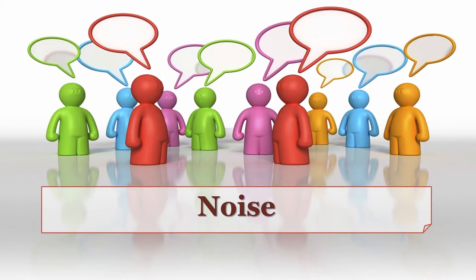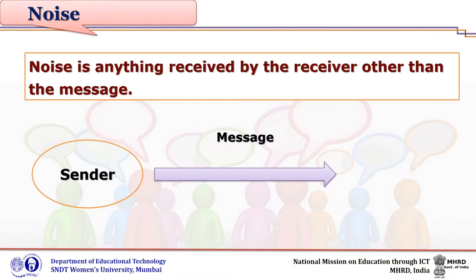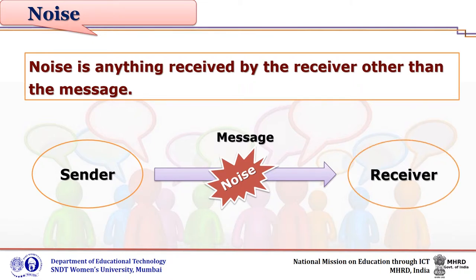To understand the general model of communication, we first need to understand a very important term: noise. Noise is anything received by the receiver other than the message. Even though the sender intends a particular message, gives some form to the message and transmits it, there are some messages which are not intended by the sender but get mixed with the message.